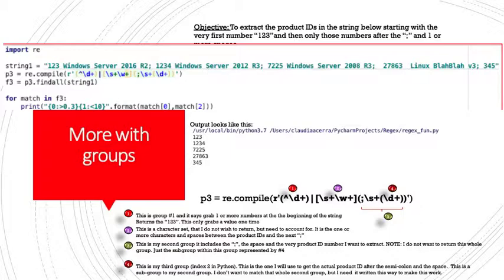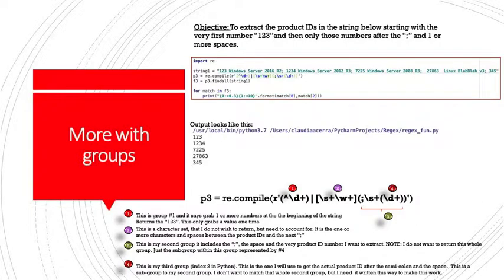The string represents a product ID followed by a product. In this case, Windows Server 2016 Release 2. These are all made up. Then we have a semicolon, and then we have another product ID and a product, and the pattern goes on and on. The idea here is we only are interested in a list of the product IDs, just those numbers, and only those numbers that follow the semicolon and the space, except for the start of this, which is its own pattern. It's just three numbers. It doesn't follow, much like in the previous example, the same pattern for everything else.